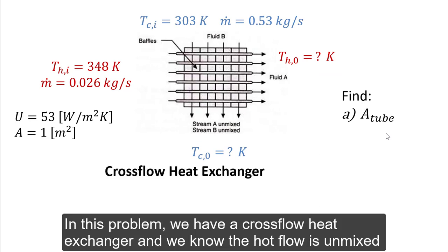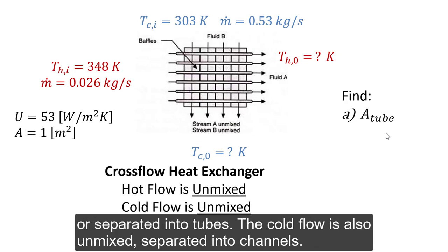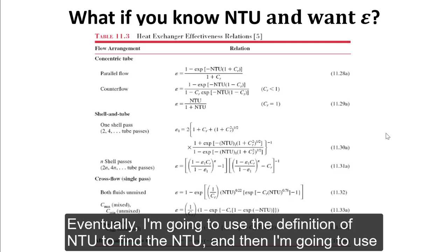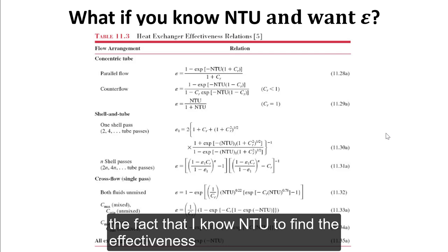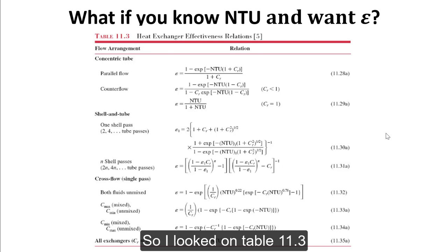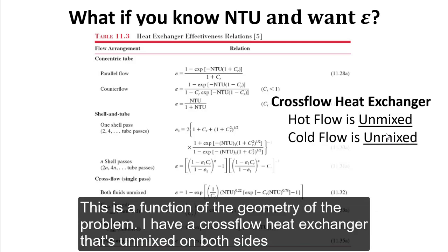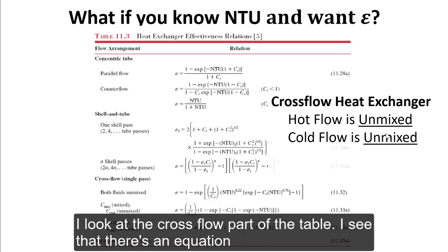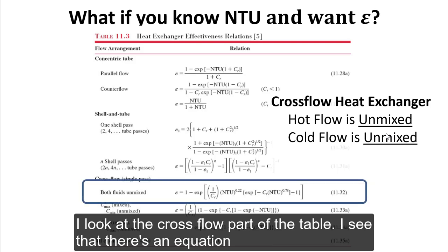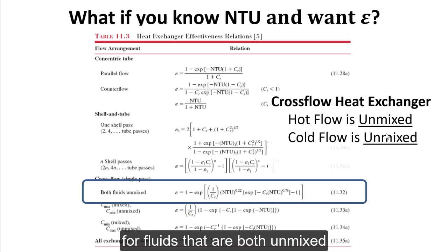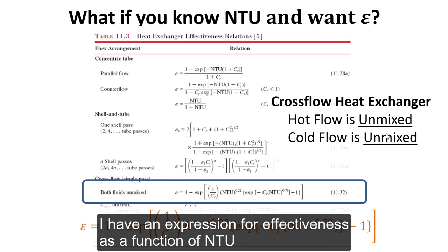In this problem, we have a cross-flow heat exchanger, and we know the hot flow is unmixed — separated into tubes — and the cold flow is also unmixed, separated into channels. Eventually, I'm going to use the definition of NTU to find the NTU, and then use that to find the effectiveness. So I look on Table 11.3 for an equation that gives me effectiveness as a function of NTU. This is a function of the geometry, so I have a cross-flow heat exchanger that's unmixed on both sides, and I find an expression for effectiveness as a function of NTU.